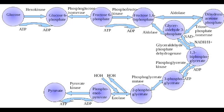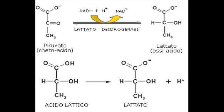The reason why pyruvate is transformed into lactate is to regenerate NAD+ from NADH and H+, which is formed in glycolysis by the glyceraldehyde phosphate dehydrogenase. Normally, the oxidation of NADH+H+ happens thanks to oxygen. In this case, since there isn't enough oxygen, the oxidation must happen by transferring the two hydrogens to pyruvate, transforming it into lactate, in order to have more NAD+ available for additional glycolytic cycles.